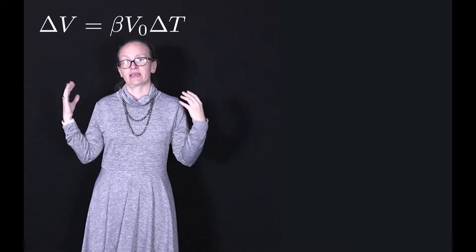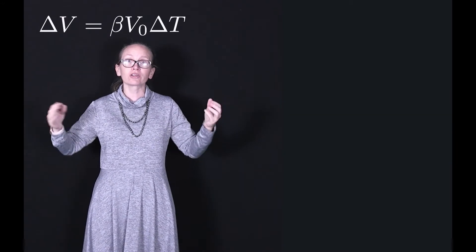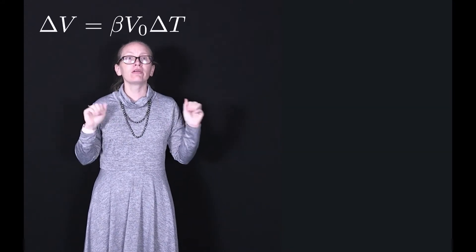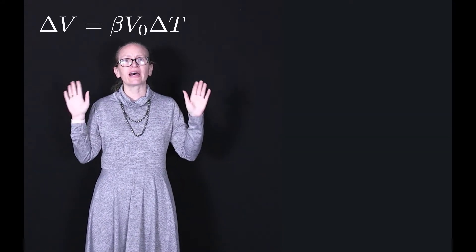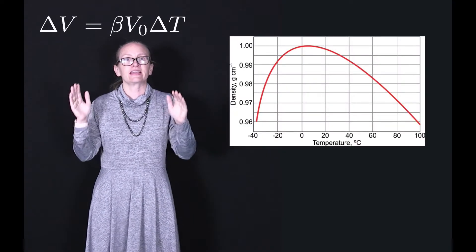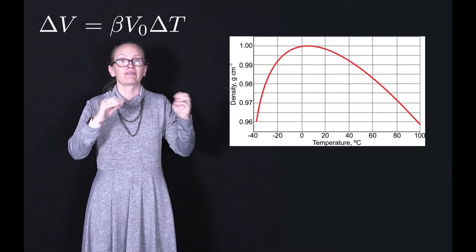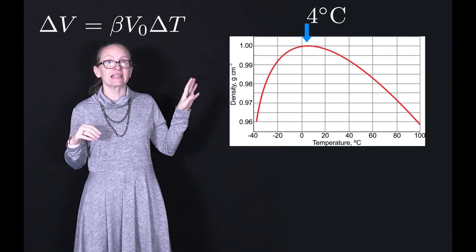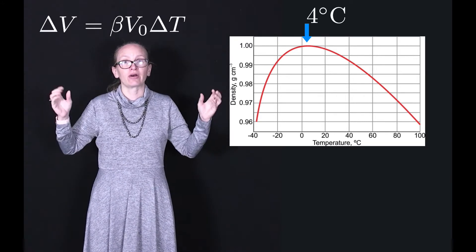This is even a good approximation for water above 4 degrees C. However, below 4 degrees C, water is a bit special. So what I've got here is a density versus temperature graph for water. And you can see that at 4 degrees C there's a turning point.